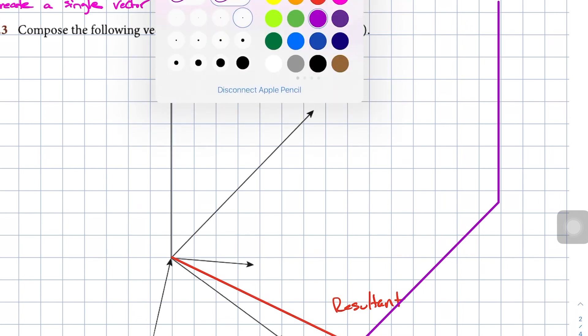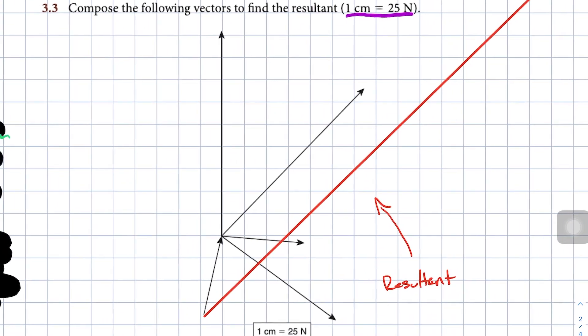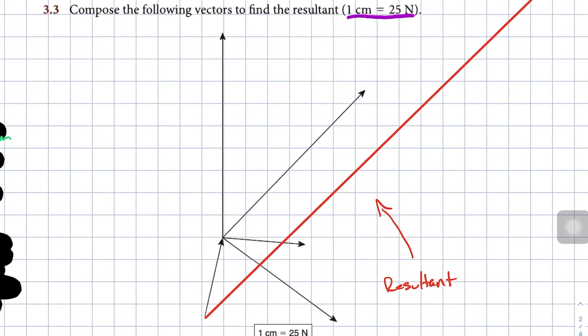And now all I have to do is draw one big resultant. And I'll erase the guidelines. And here's our new resultant. And in order to get the magnitude of this resultant vector, all we need to do is measure it. I'm not going to measure it here because I don't have a ruler. But that's how you do vector composition.